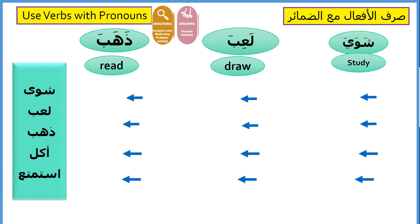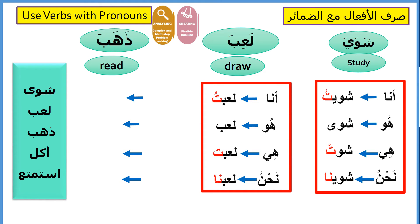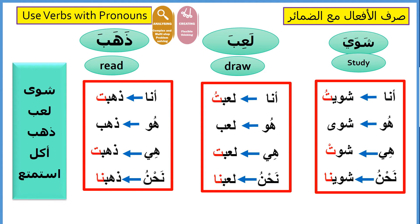والآن جاء دور تصريف الأفعال مع الضمائر. It's your turn to use the verbs with the different pronouns: شوى، لعب، ذهب. أنا شويت، هو شوى، هي شوت، نحن شوينا. أنا لعبت، هو لعب، هي لعبت، نحن لعبنا. أنا ذهبت، هو ذهب، هي ذهبت، نحن ذهبنا.